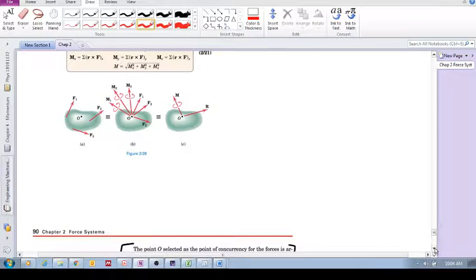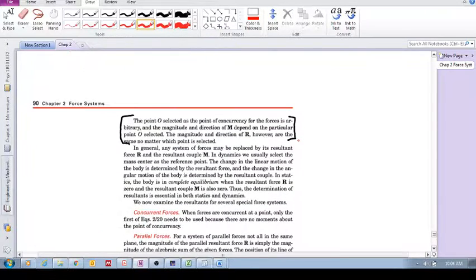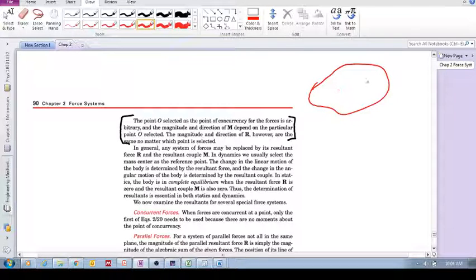This is in three dimensions. I like this paragraph - it says the point O selected as the point of concurrency for the forces is arbitrary. If you've got the forces, you can select any point you want.